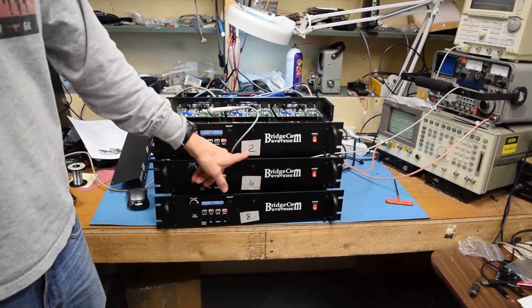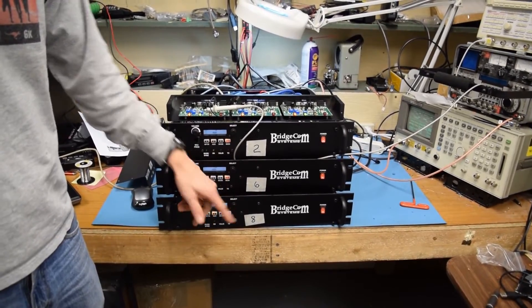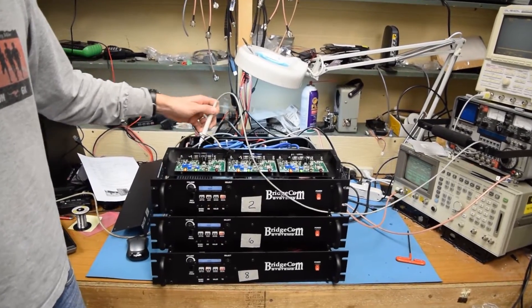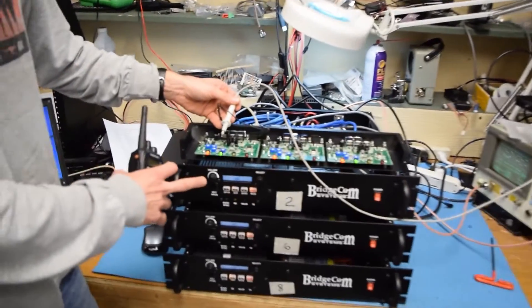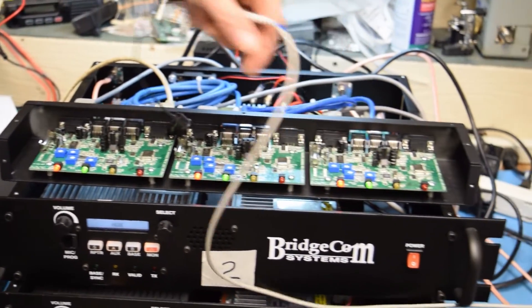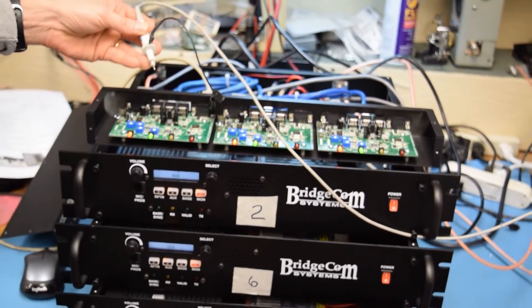As you can see, I've labeled the repeaters numbers two, six, and eight, and I've got three controllers that we sell, our LTR controller. They're arrayed side-by-side. This is actually corresponding to repeater number two, and we got repeater number six and repeater number eight.